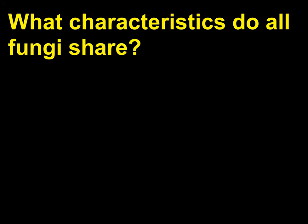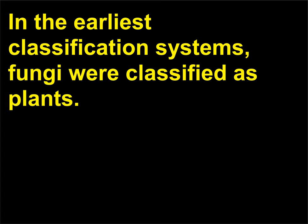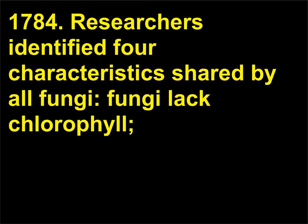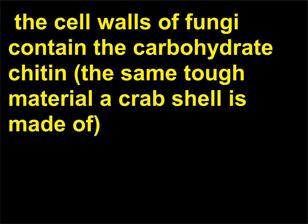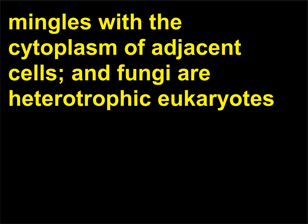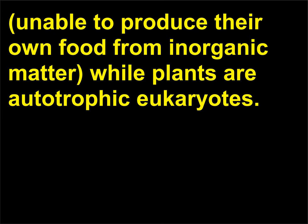What characteristics do all fungi share? In the earliest classification systems, fungi were classified as plants. The first classification system to recognize fungi as a separate kingdom was proposed in 1784. Researchers identified four characteristics shared by all fungi: fungi lack chlorophyll; the cell walls of fungi contain the carbohydrate chitin, the same tough material a crab shell is made of; fungi are not truly multicellular since the cytoplasm of one fungal cell mingles with the cytoplasm of adjacent cells; and fungi are heterotrophic eukaryotes, unable to produce their own food from inorganic matter, while plants are autotrophic eukaryotes.